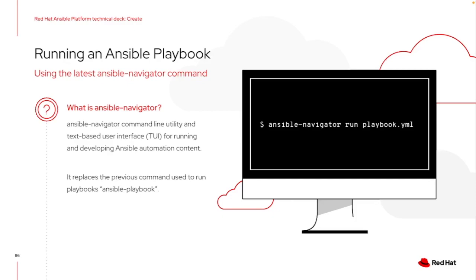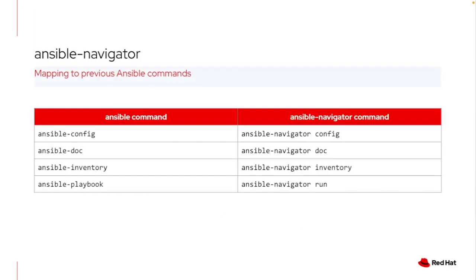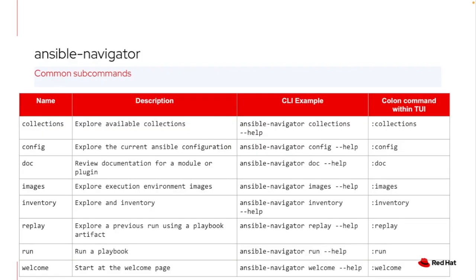If you're not familiar with Ansible Navigator, it's the new command line tool that helps you run playbooks inside execution environments. Something as simple as 'ansible-navigator run' and then the playbook name will run that playbook inside the new text user interface. You can also use standard out mode. It lets you see what the inventory is, see documentation, configurations, and even dive deeper to see the actual collections inside the execution environment you're leveraging — so you know exactly what you're developing against.